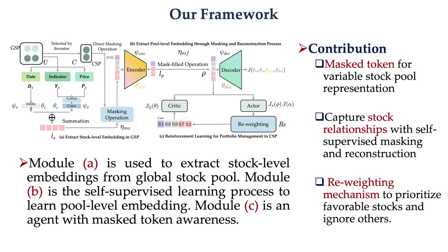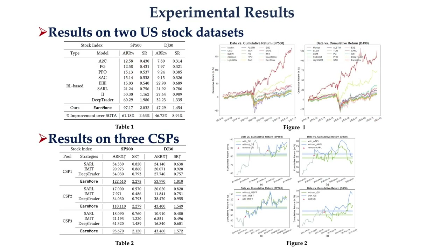The performances of Earn More and other baseline methods on two U.S. financial markets, SP500 and DJ30, are shown in Table 1, with cumulative return results drawn in Figure 1. We also train and test each baseline method individually for each CSP, as those methods show no adaptive ability in customized stock pools. We then compared three state-of-the-art RL-based methods with Earn More on two important metrics, as shown in Table 2. To evaluate Earn More's ability to adapt to investors' personal decisions during trading, we display dynamic changes across several real-world CSP adjustment scenarios in Figure 2. Both our methods achieve significant improvements, highlighting robustness on customizable stock pools.